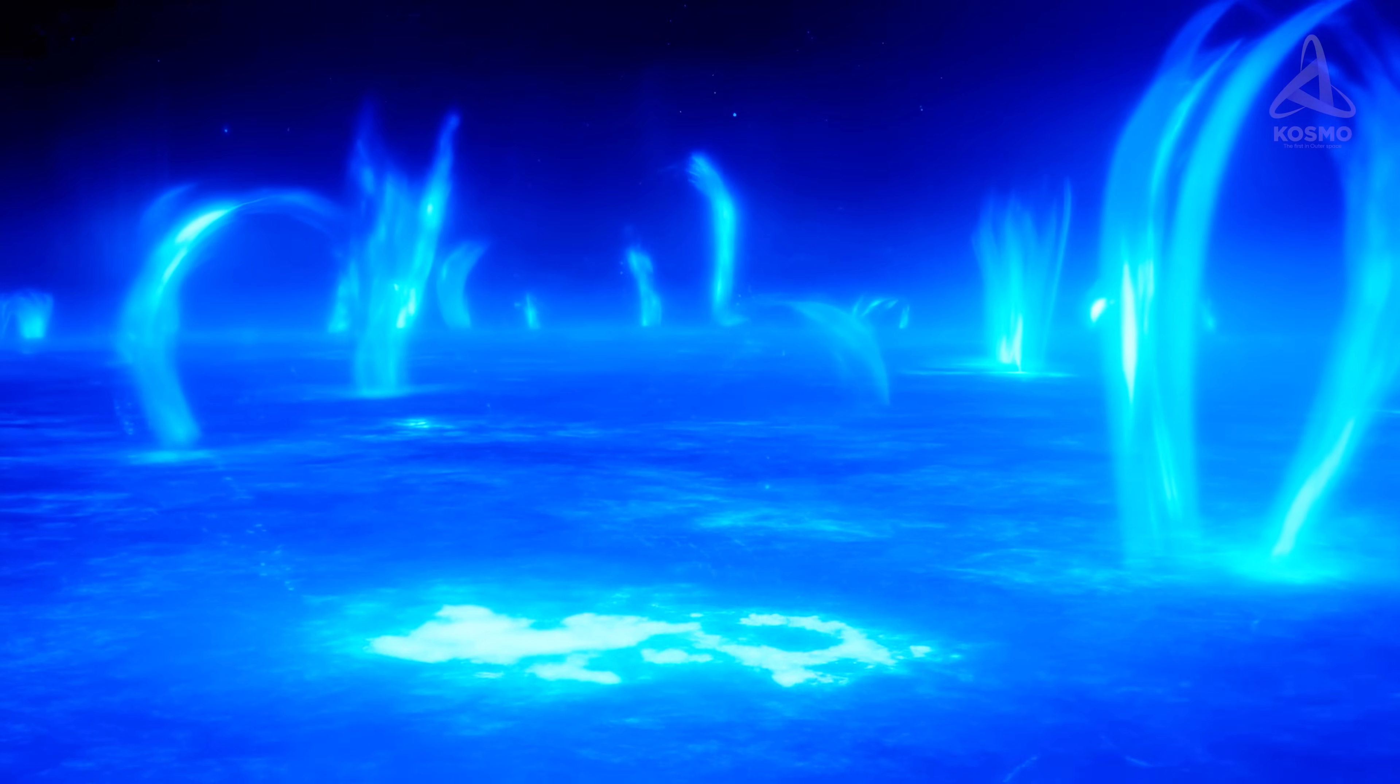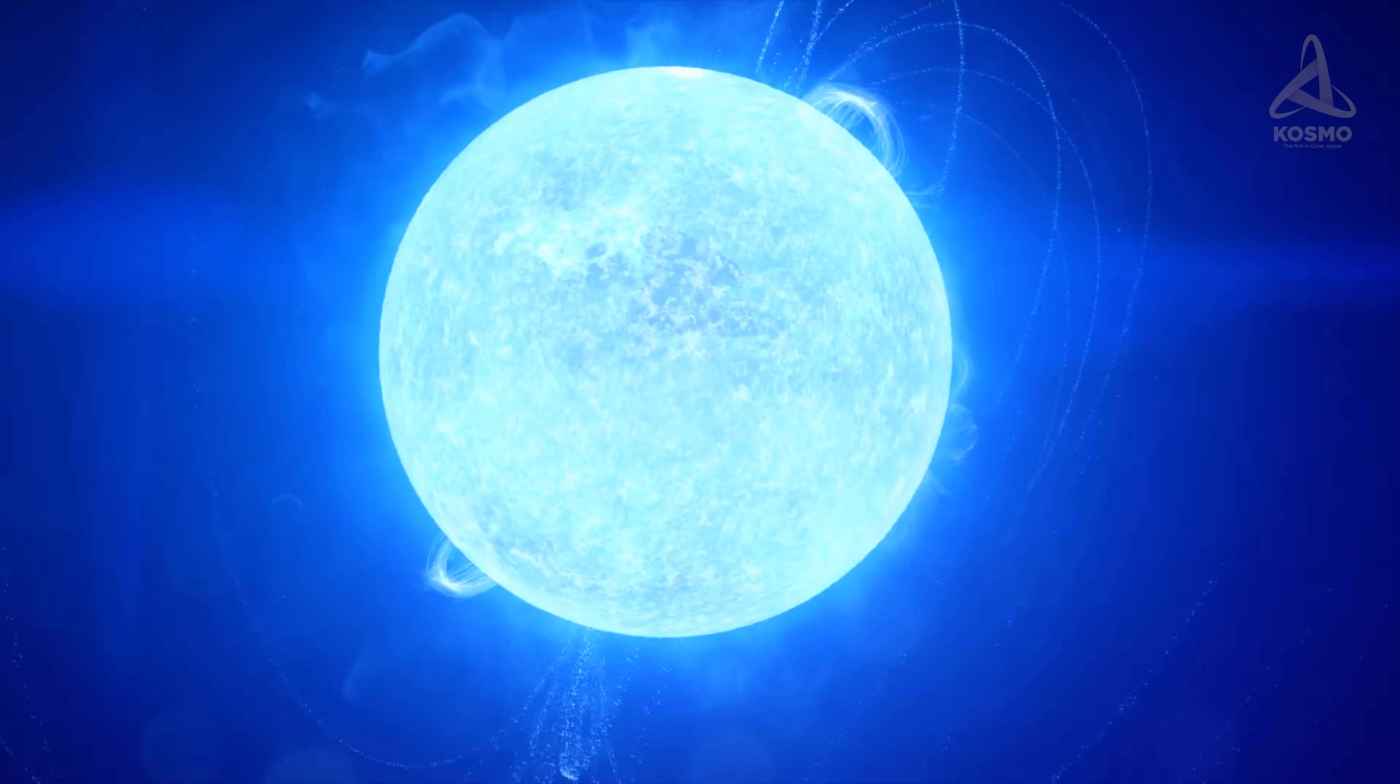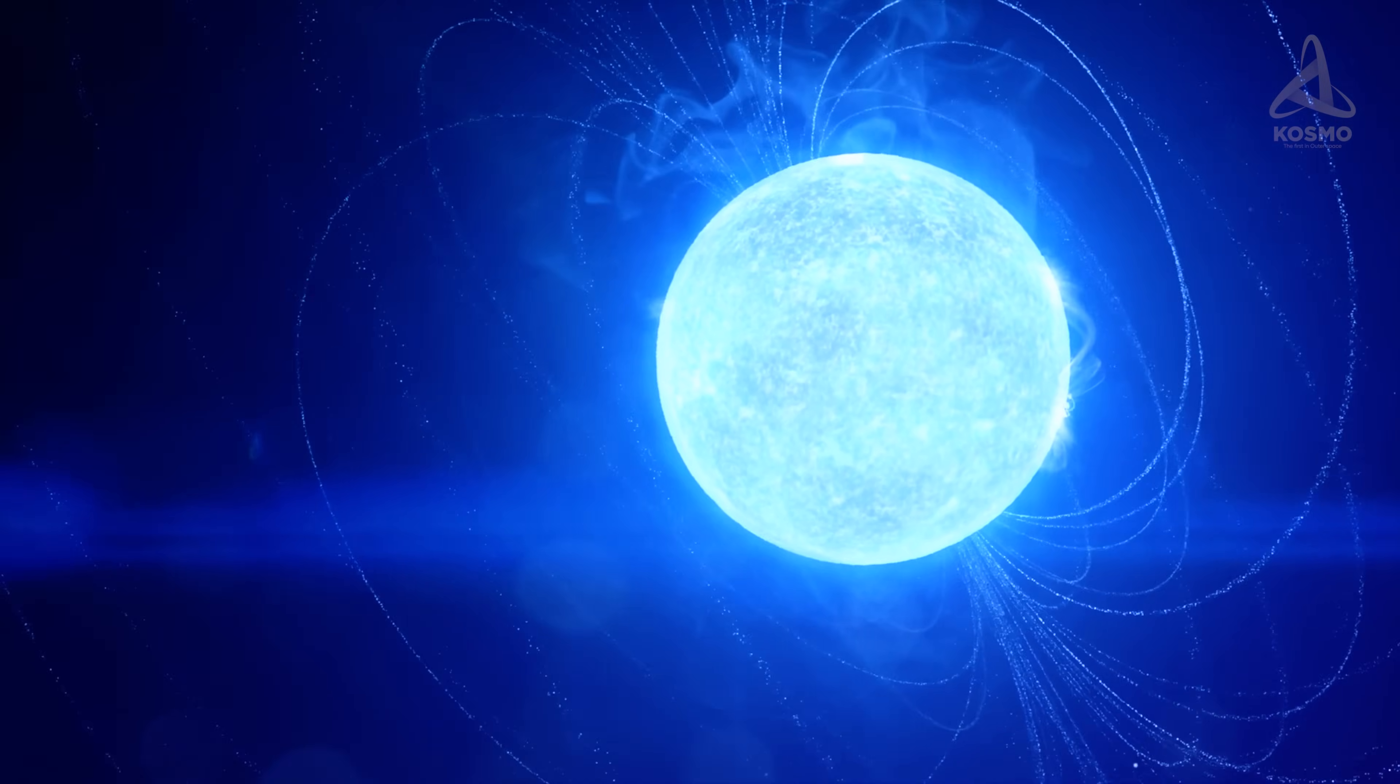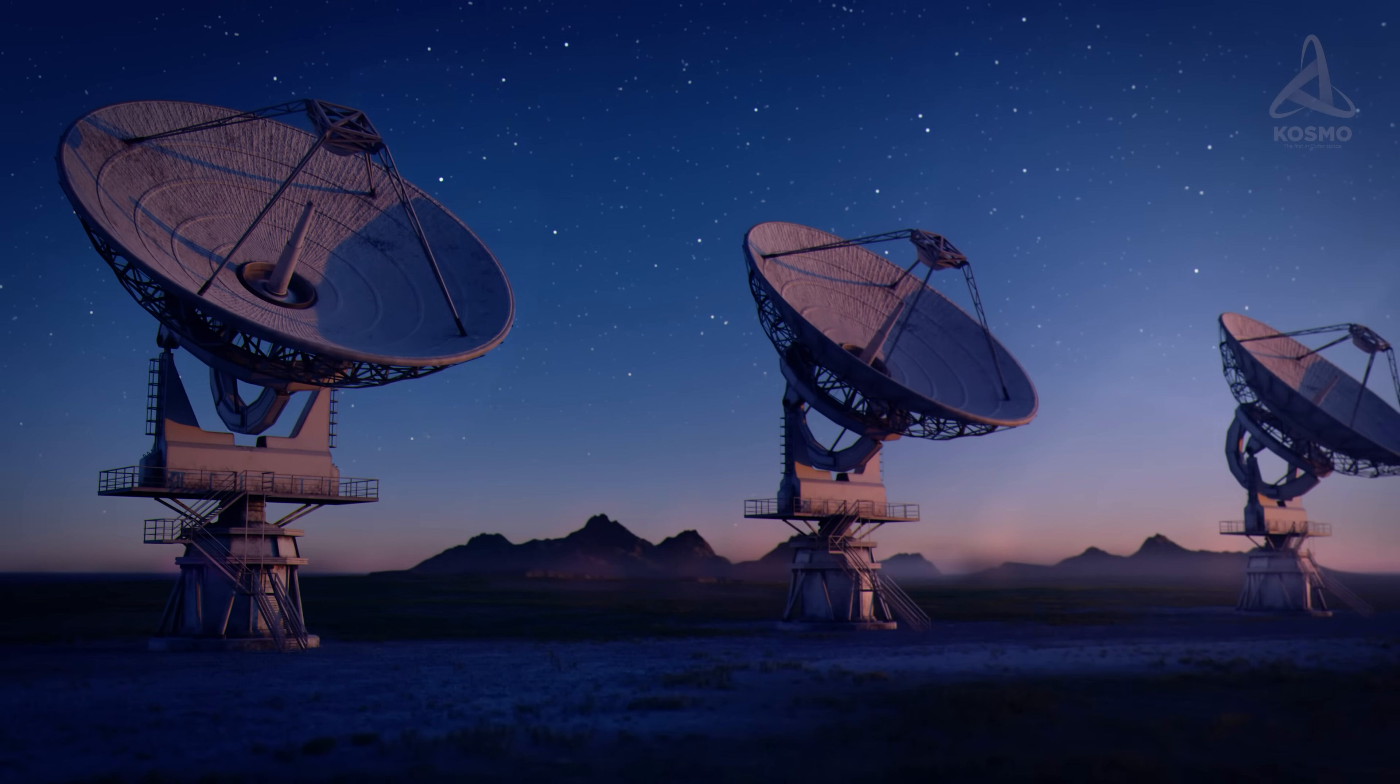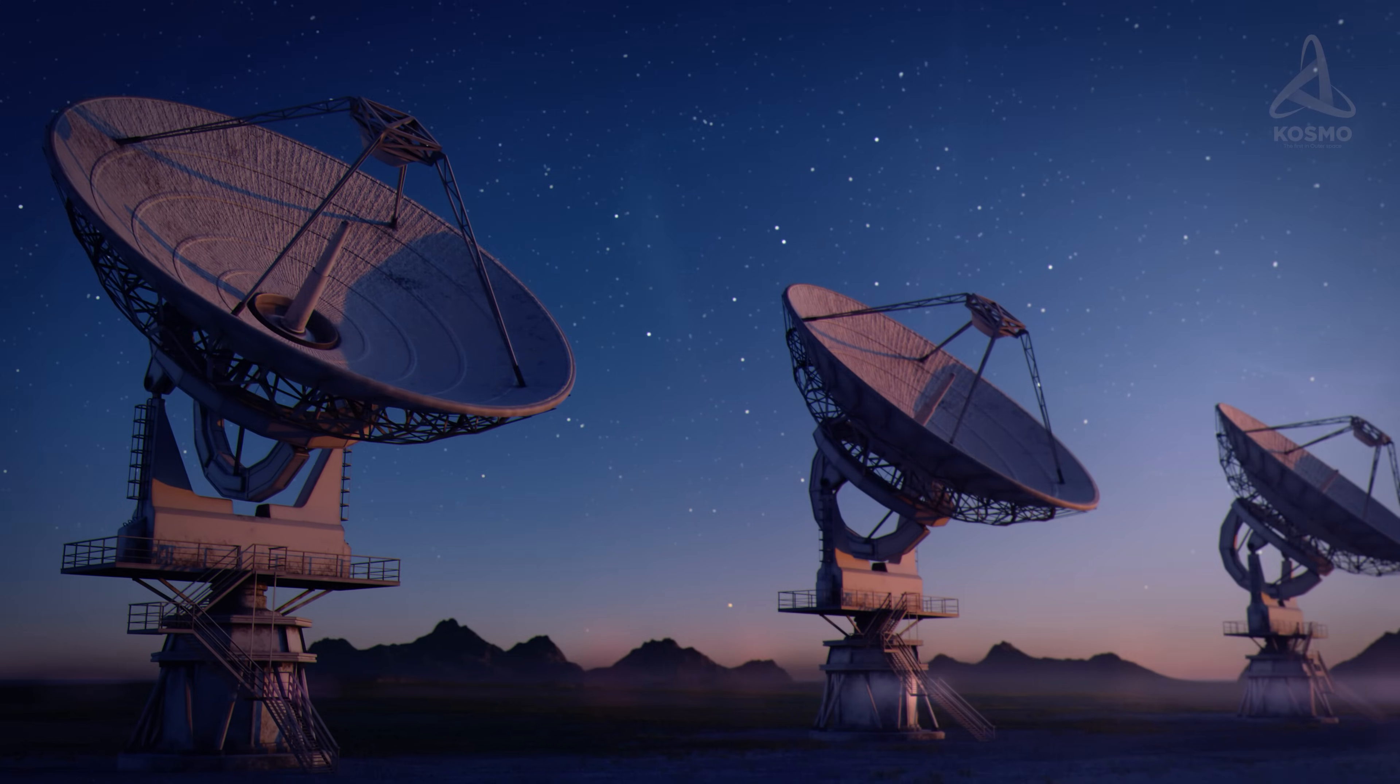Thanks to this effect, most neutron stars have a very high rotational speed, and the interaction of their magnetic and electric fields generates powerful bursts of radiation repeated with a very clear periodicity. Such objects are called pulsars, and they make up the majority of neutron stars discovered so far. Their pulses are effectively detected by X-ray telescopes even at distances of thousands of light-years.